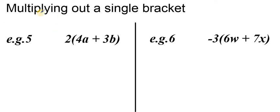In this video demonstration I'm going to show you how to multiply out single brackets, but this time we've got combinations of letters in each bracket. We've got 2(4a + 3b) in this bracket, and in this one we have -3(6w + 7x).